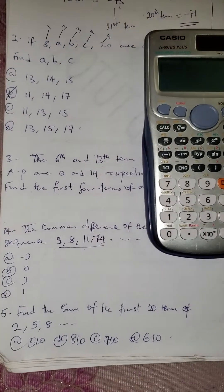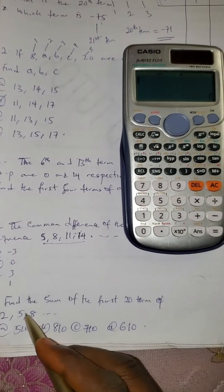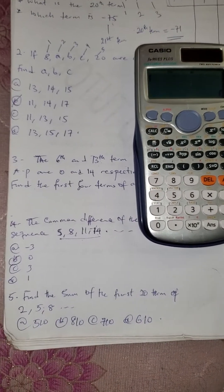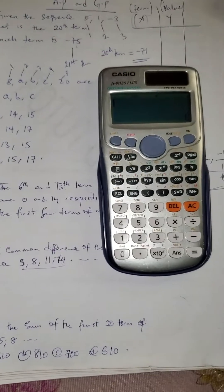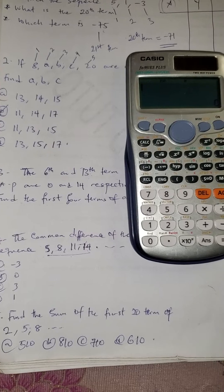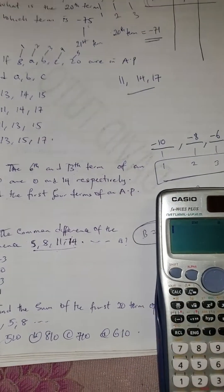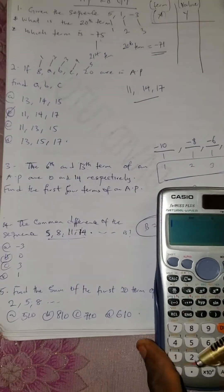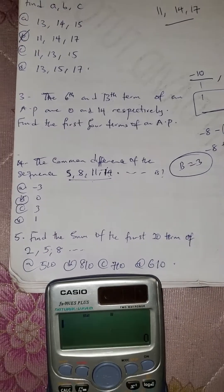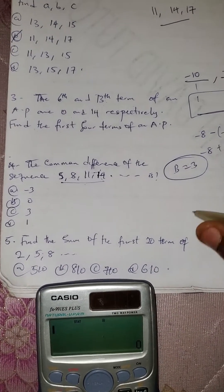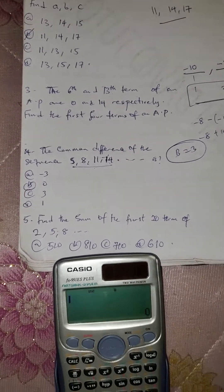Lastly, we are asked to find the sum of a sequence — specifically the sum of the first 20 terms. There are two methods for finding the sum on the calculator.